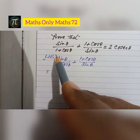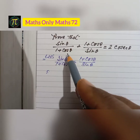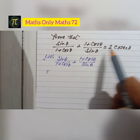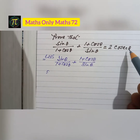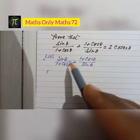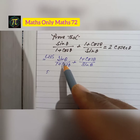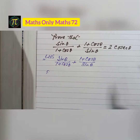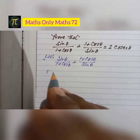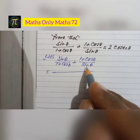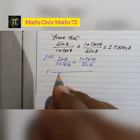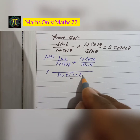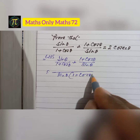Prove that sin θ / (1 + cos θ) + (1 + cos θ) / sin θ equals 2 cosec θ. Taking the left hand side: sin θ / (1 + cos θ) + (1 + cos θ) / sin θ. I find the LCM of the denominators, which is sin θ into (1 + cos θ).